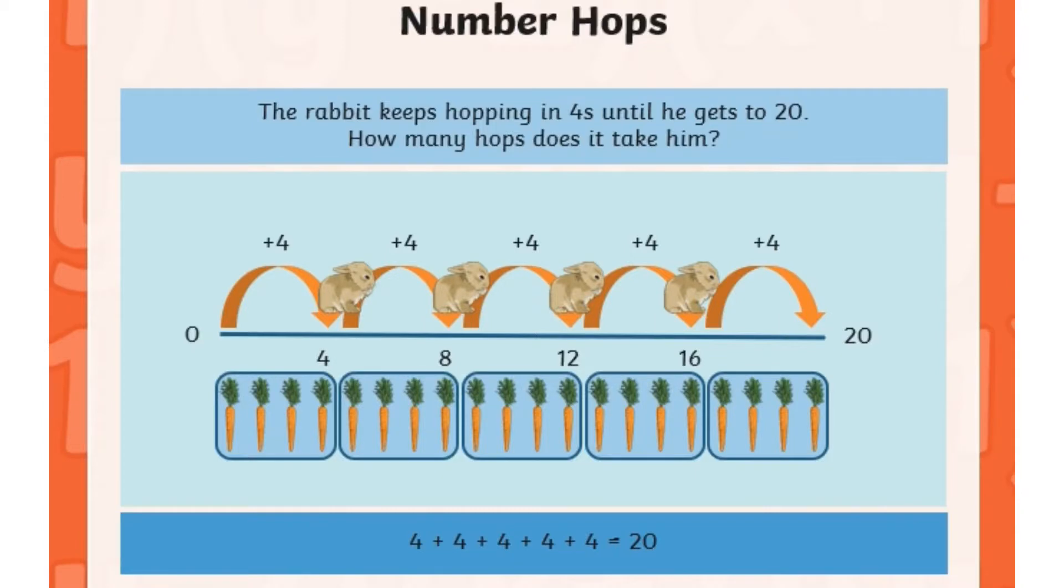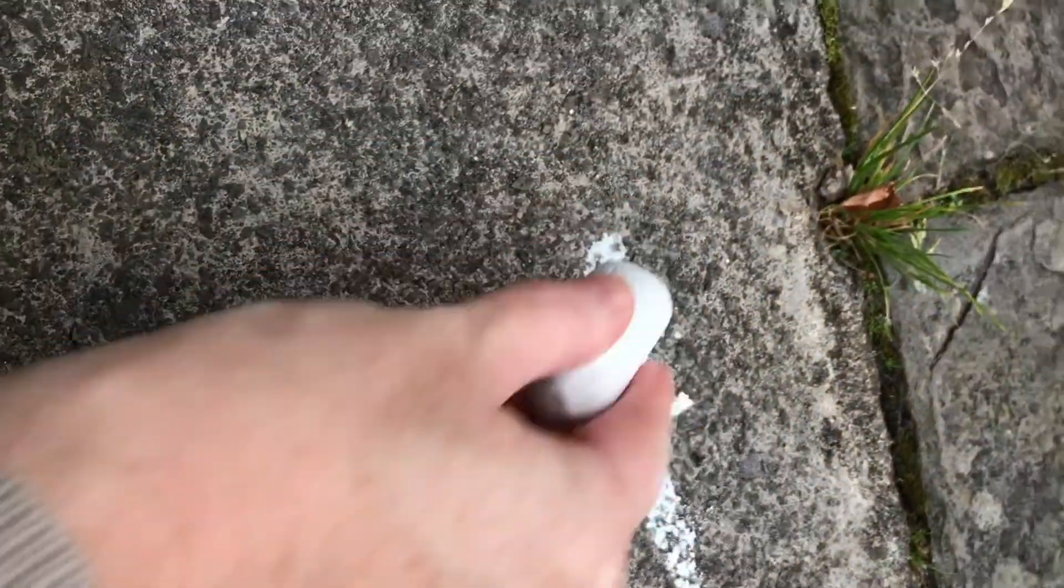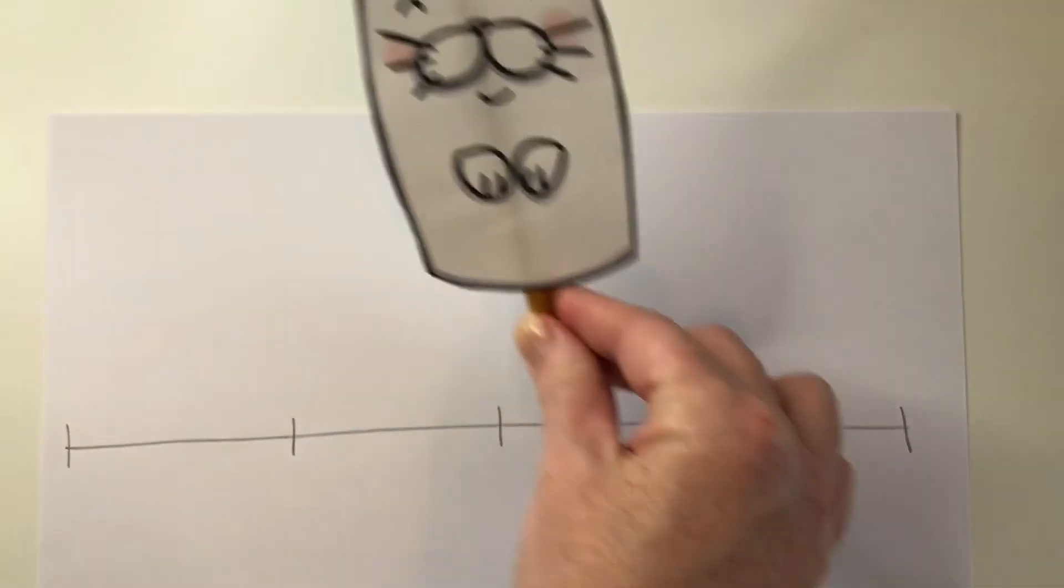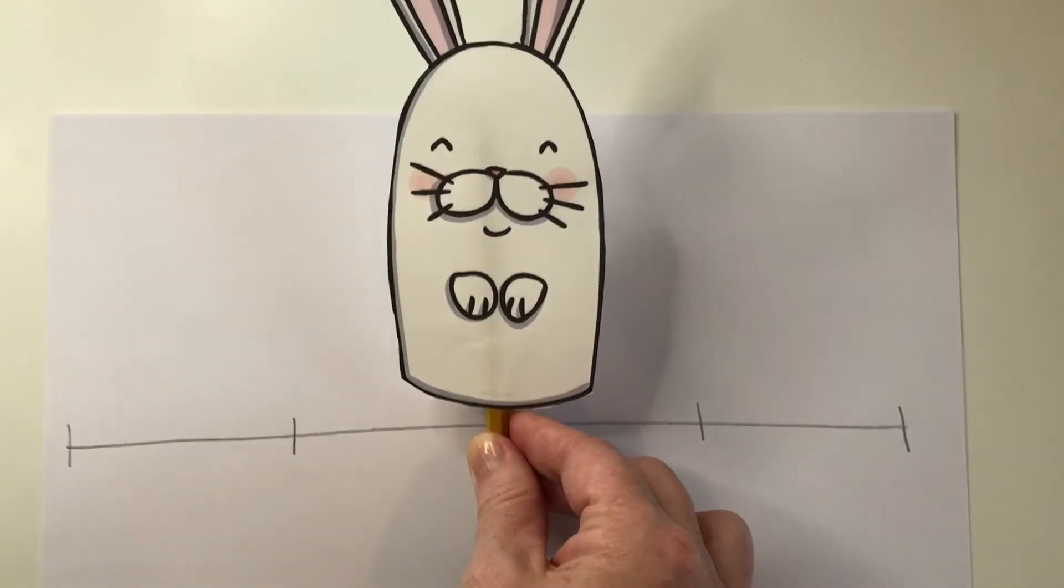This slide uses a very cute rabbit to hop in groups of four until he gets to 20 to work out 20 divided by 4. Why not take this bunny hop idea outside and chalk out a number line? Or make a bunny stick puppet to encourage younger children to hop up or down the number line.